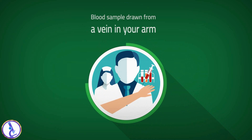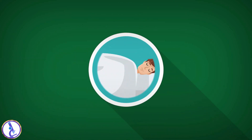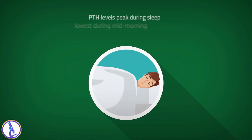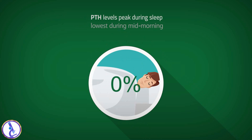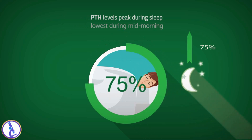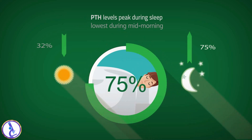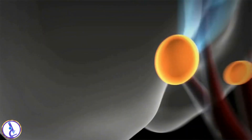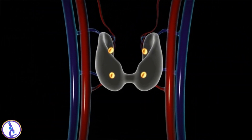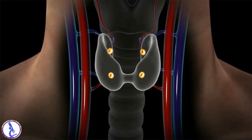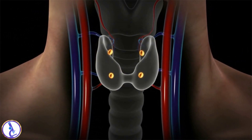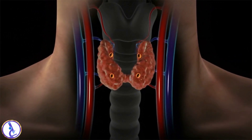The sample required is a blood sample drawn from a vein in your arm. PTH levels peak during sleep hours and are lowest during mid-morning to late afternoon hours, the period when most samples are drawn. PTH is produced by four button-sized parathyroid glands located in the neck behind the thyroid gland.